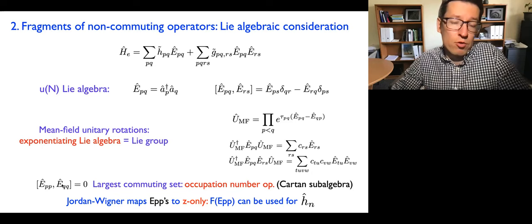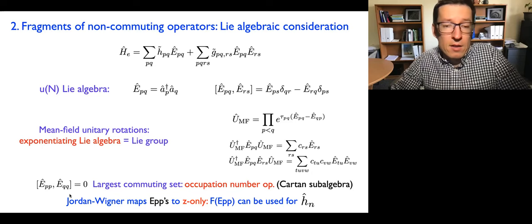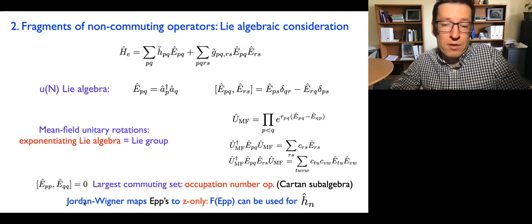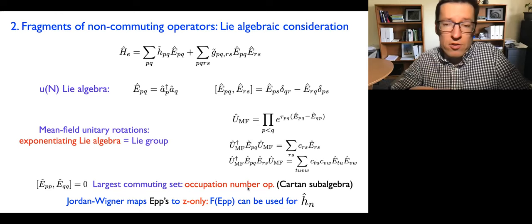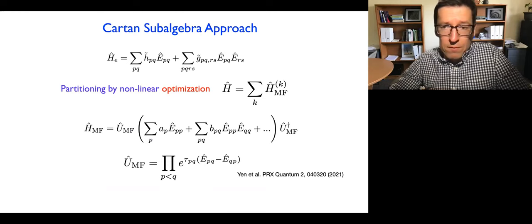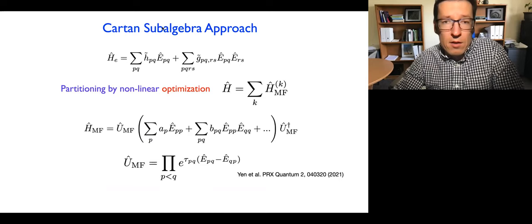The last and very important element of the Lie algebra consideration is that there are commuting parts within the Lie algebra. In this particular case those are the occupation numbers, which form the largest commuting set. In Lie algebra language, that commuting set is called the Cartan subalgebra, since the commuting terms form a closed subalgebra.